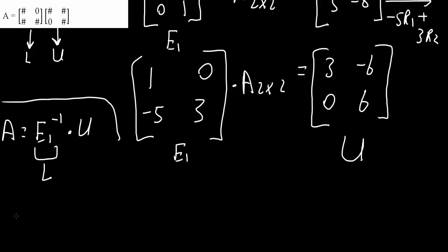And so, now we're very close. Now we can say that A is equal to the inverse of E. So, that means [1  -5; 0  3]⁻¹ times U, which was this: [3  -6; 0  6].